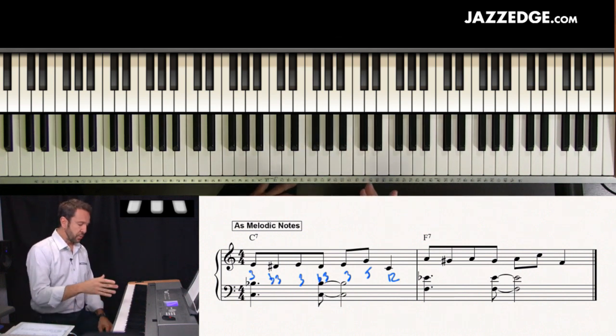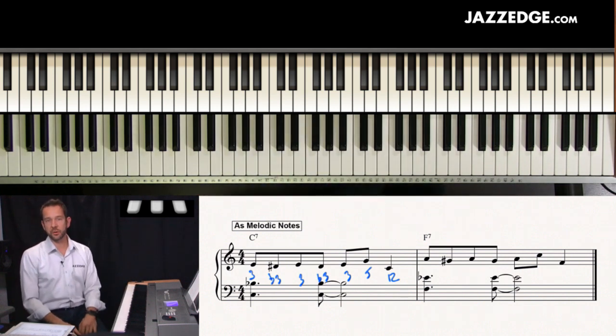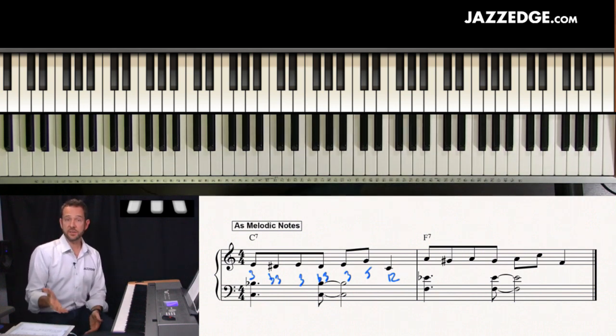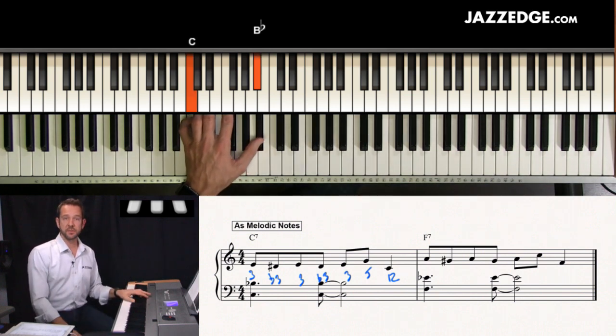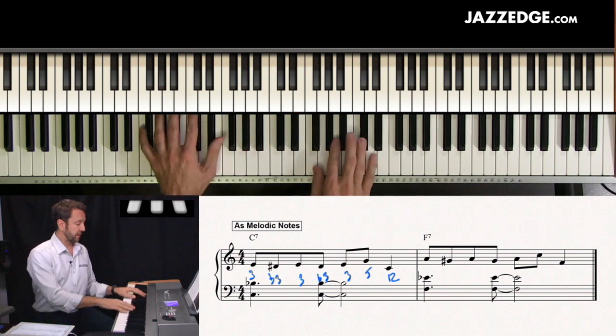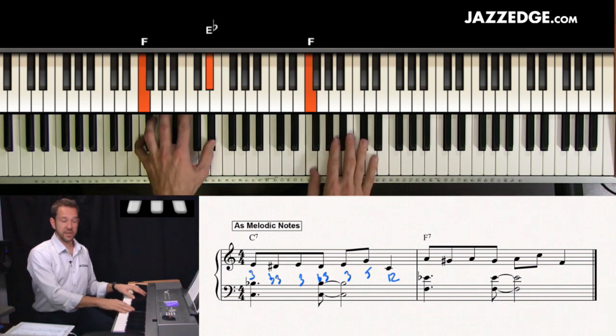So you want to be very comfortable being able to move in between each of those three chords. So let me give you an exercise that you can practice. The very first thing you could do is just try playing that root seven in the left hand and just try doing the root third, third fifth for each of these chords, the C, the F and the G.